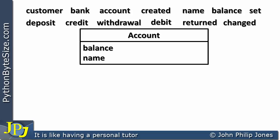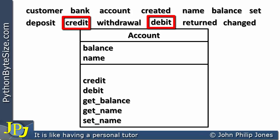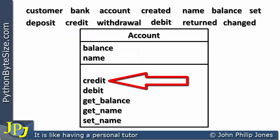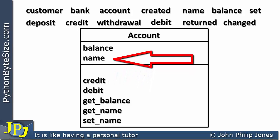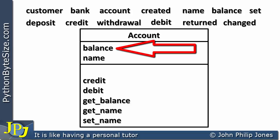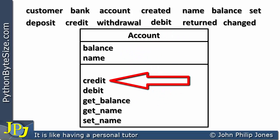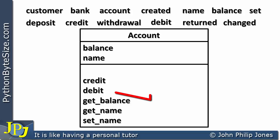Looking at the list of words, the two nouns I'm particularly interested in are the balance of the account and the name of the customer. I'll put those in as data fields of the class — these are the variables that will hold the balance and the name. The next thing is to look at the verbs. The two verbs I'm interested in are 'credit' and 'debit', and I'm going to show those in the other part of the UML diagram. Credit is going to do something to the balance — if I put £100 in, the balance goes up by £100. The debit method will reduce the balance by the amount I wish to withdraw.